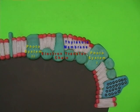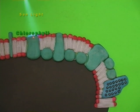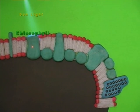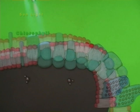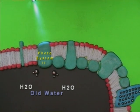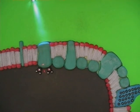In the thylakoid membrane, old water can be split and then reconstructed into new water. When sunlight shines on chlorophyll pigments in Photosystem II, energized electrons are passed along an electron transfer chain to Photosystem I. Water molecules are attracted to Photosystem II, and electrons are stripped from the water's hydrogen atoms to replace the electrons lost by chlorophyll.